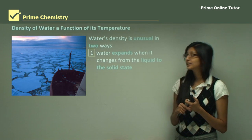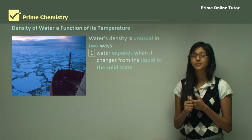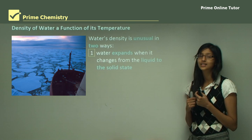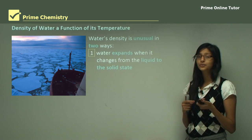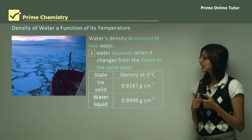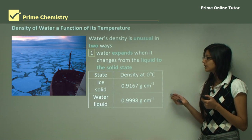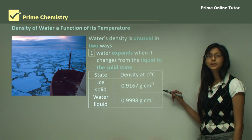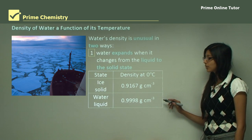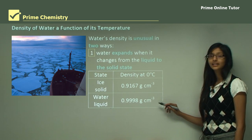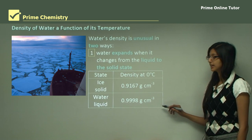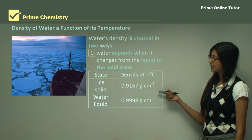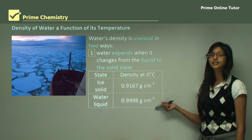Water's density is very unusual. That's because water expands when it changes from a liquid to a solid state. The density of solid ice is 0.9167 grams per cubic centimeter, whereas the density of liquid water is 0.9998 grams per cubic centimeter. As you can see from this table, the density of ice is much lower than the density of liquid water.